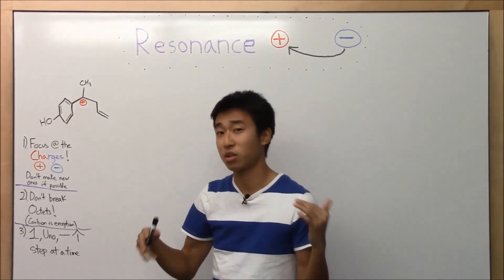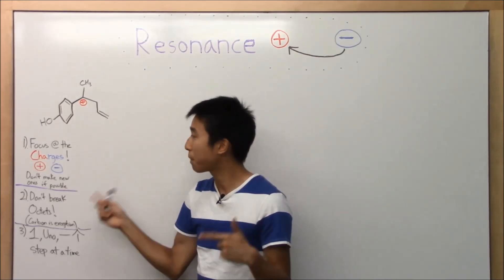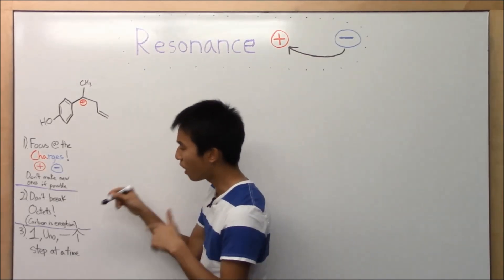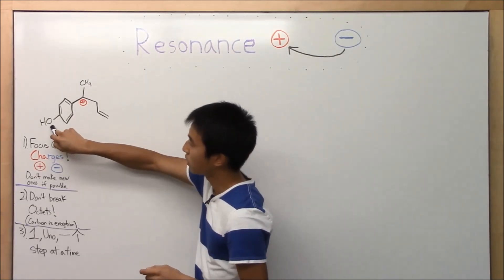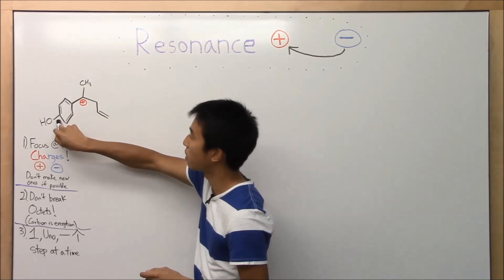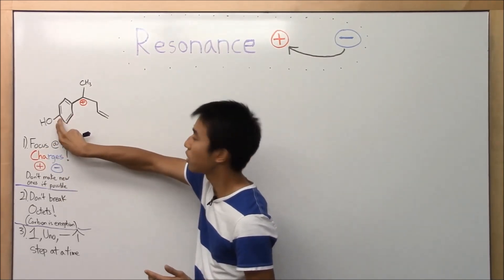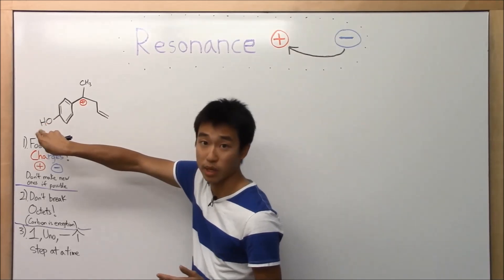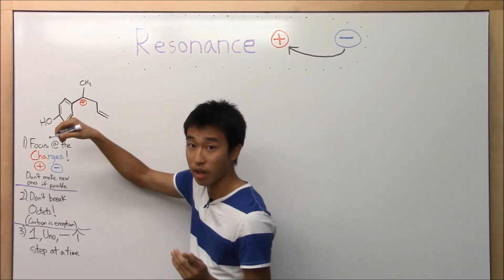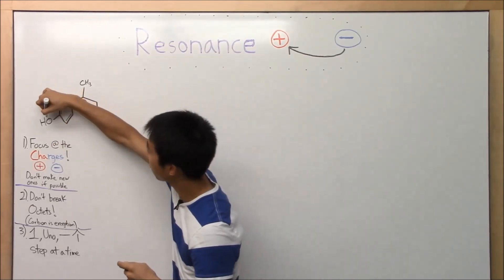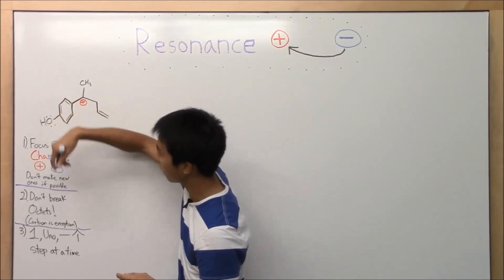Two: don't break octets. If you don't know what octets are, look back in your notes. Octets mean every atom needs eight electrons around it. So this oxygen here has one bond with the carbon and one bond with the hydrogen — that's two electrons in each bond, that's four. So oxygen must have two lone pairs, because that way it has an octet: two, four, six, eight.